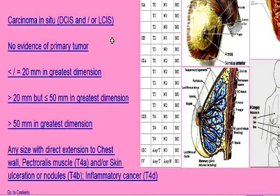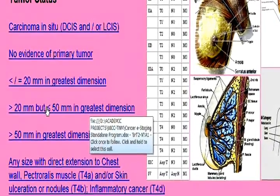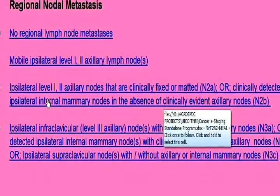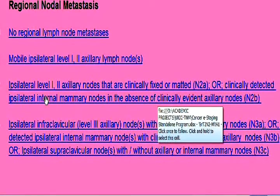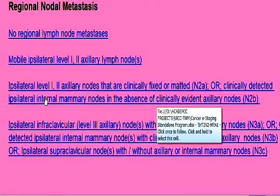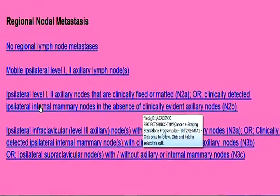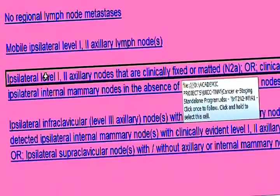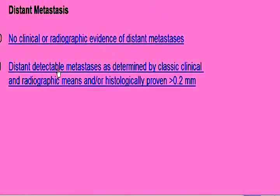This will bring us to the lymph node status page of the patient. Let's say this patient has got internal mammary lymph nodes, in which case we click on the N2 option. Once we click, it immediately takes us to the metastasis page. If the patient has no distant metastasis, we click on M0. We can see the stage of the patient is Stage 3A.